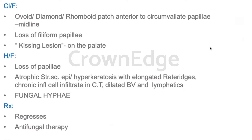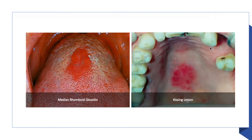Note: a 'kissing disease' is infectious mononucleosis caused by Epstein-Barr virus — a separate entity discussed in a future session. Histologic features of median rhomboid glossitis include loss of papilla, atrophic stratified squamous epithelium or hyperkeratosis with elongated rete ridges, chronic inflammatory cell infiltration in connective tissue with dilated blood vessels and lymphatics, and fungal hyphae in the region. Treatment: it regresses over time, but antifungal therapy speeds resolution.